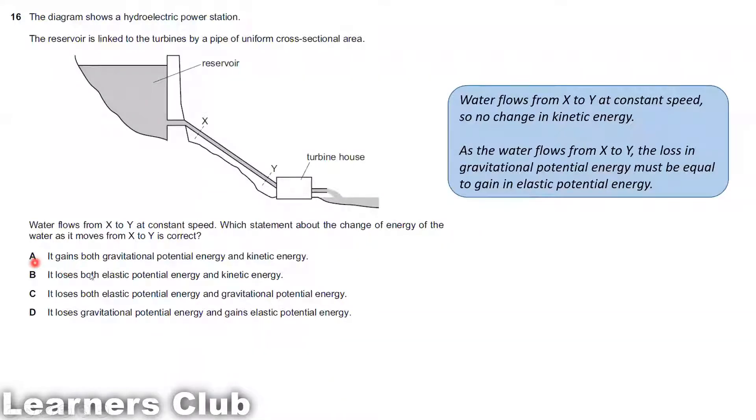Let's see option A: It gains both gravitational potential energy and kinetic energy. This statement is wrong because potential energy is decreasing and no change in the kinetic energy. Option B: It loses both elastic potential energy and kinetic energy. This is wrong because there is a gain in elastic potential energy and no change in the kinetic energy. Option C: It loses both elastic potential energy and gravitational potential energy. This is also incorrect. When there is a loss in gravitational potential energy, there should be a gain by the other energy.